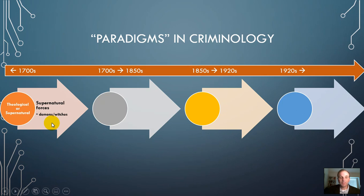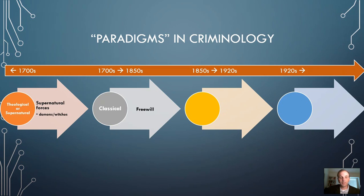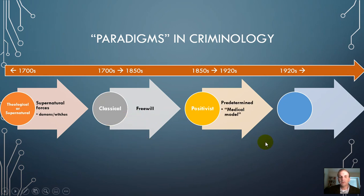In the 1700s, something significant happened — a lot of philosophical development occurred, generally referred to as the Age of Enlightenment, spanning the 1700s and 1800s. The classical perspective comes into criminology. The main assumption is that people aren't possessed by demons or evil — they have free will, and that's why they're committing crimes; they're innately greedy. Jeremy Bentham and Cesare Beccaria held that humans have free will, and today most people in American society probably still subscribe to that mentality, which is what our criminal justice system is generally based on.